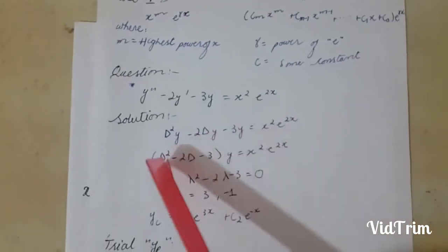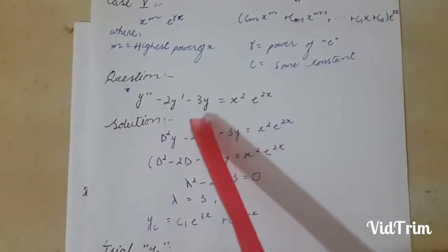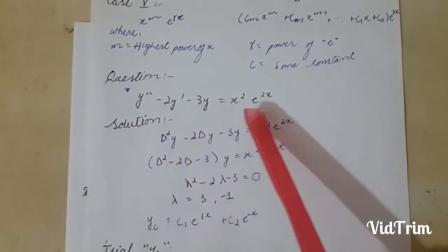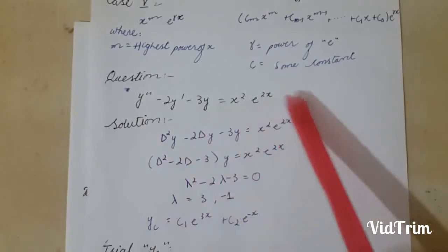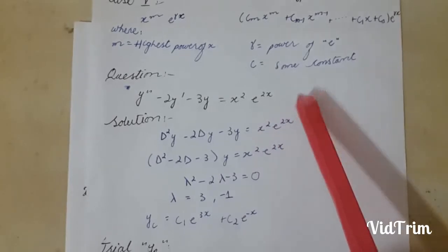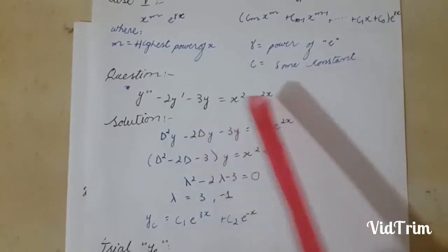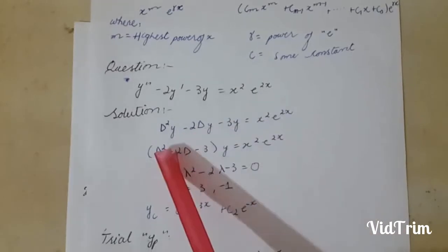I have a question: y double derivative minus 2y derivative minus 3y equals x squared times e^x. We can transform this equation into this form.